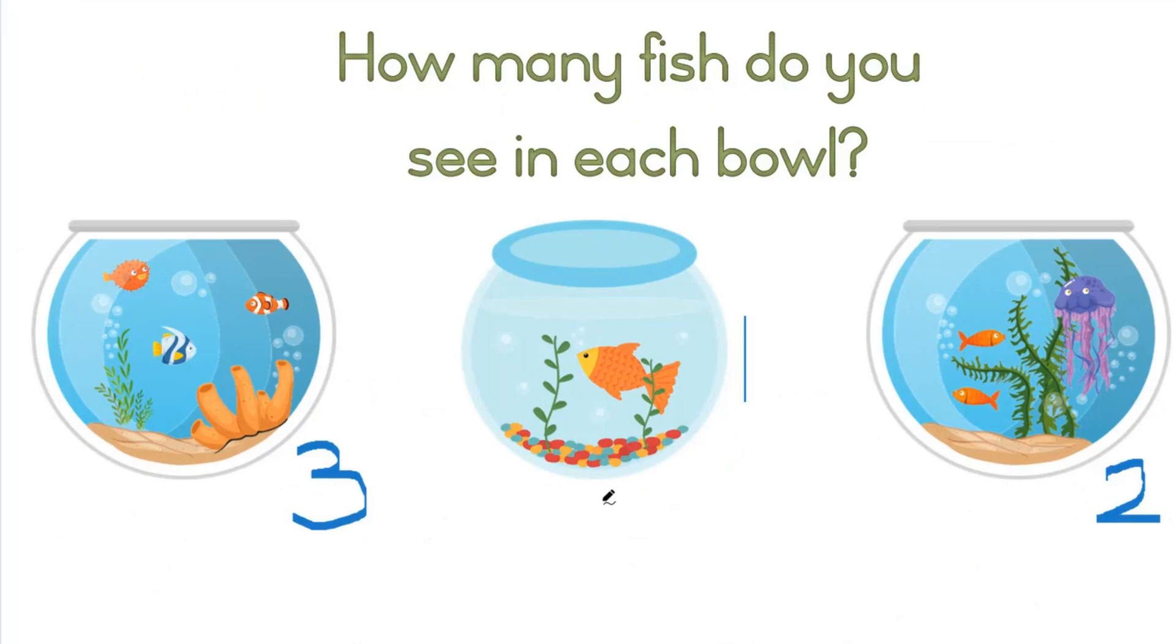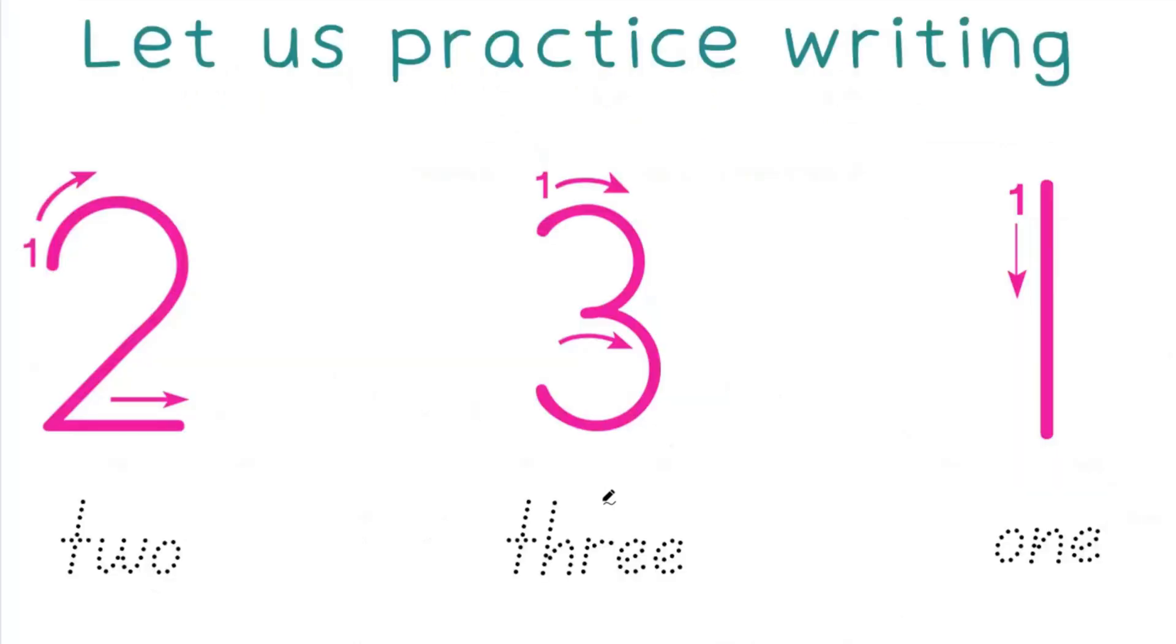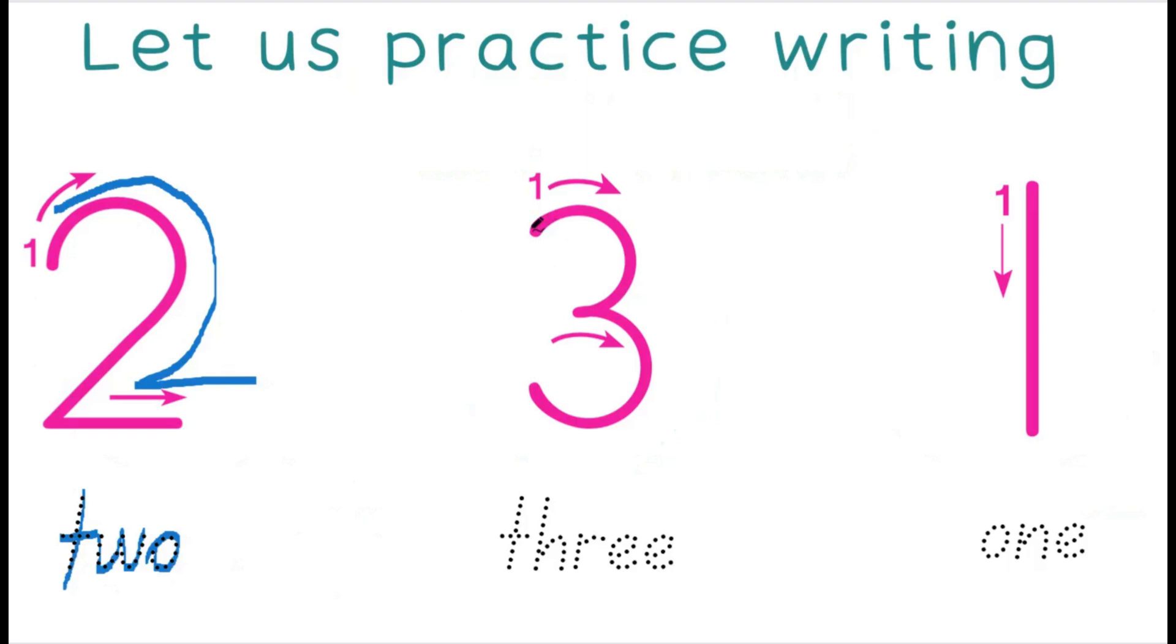Let's move on. Let's practice writing. 2, this is how we write the number 2. 1, 2, and this is how we write the word 2. 2, T, W, O. 2, T, W, O spells the number 2.